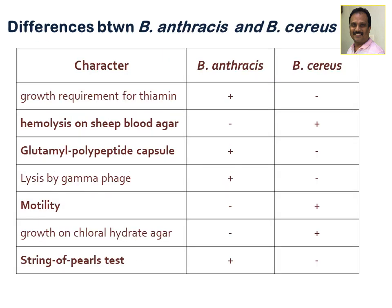There are nearly seven differences between Bacillus anthracis and Bacillus cereus. Most importantly: Bacillus anthracis does not show hemolysis on blood agar, whereas Bacillus cereus does. Anthracis possesses a glutamyl polypeptide capsule, which is absent in cereus. Anthracis is lysed by the gamma phage, which is not possible with cereus. Anthracis is non-motile whereas cereus is motile. On chloral hydrate agar, cereus can grow but anthracis cannot. Anthracis also shows a 'string of pearls' appearance in culture.